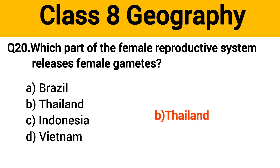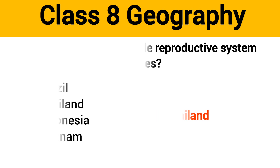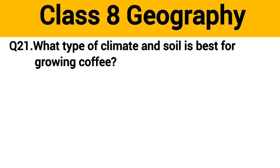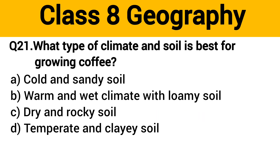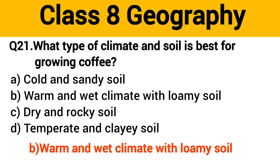Question number 20: Which country is the leading producer of rubber in the world? The right answer is option B: Thailand. Question number 21: What type of climate and soil is best for growing coffee? The right answer is option B: warm and wet climate with loamy soil.